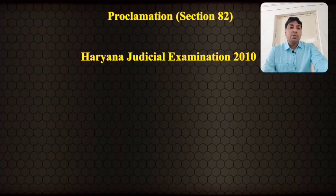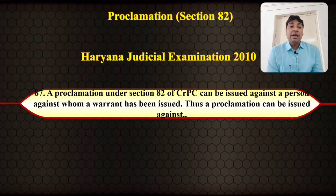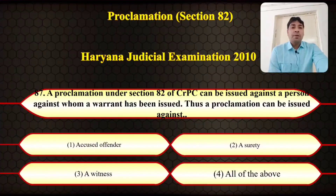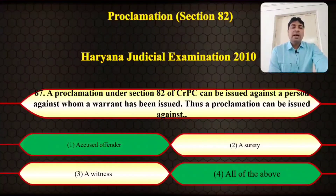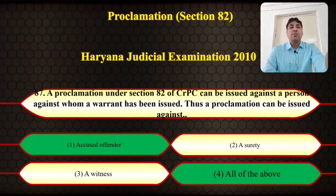Haryana Judicial Examination 2010 question: A proclamation under section 82 of CrPC can be issued against a person against whom a warrant has been issued. Thus, a proclamation can be issued against: (1) accused offender, (2) surety, (3) witness, (4) all of the above. The right answer is option one — accused offender only. A proclamation can be issued only against an accused offender, not against a surety or a witness.